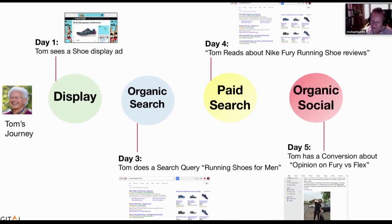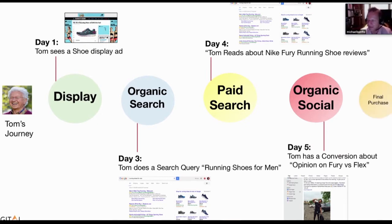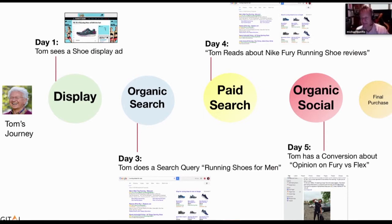On day five, Tom goes into a deeper conversation with a friend on Facebook, asking what they think of Nike Fury versus Flex, and which is the better running shoe for someone his age. That opinion led to the final purchase. You can't say everybody's journey is the same, but when you identify a persona, you'll typically find that the personas of that specific person are very similar to others.